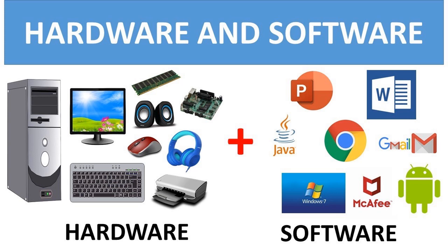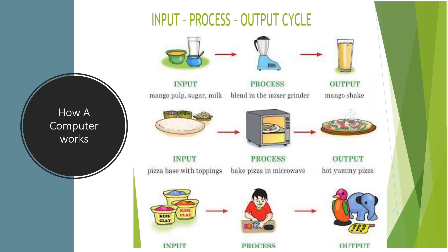Software refers to a set of instructions given to the computer to perform a particular task. Examples are MS Paint, MS Word, PowerPoint, Android, Windows, Java, Google Chrome, Gmail and antivirus software. How a computer works?